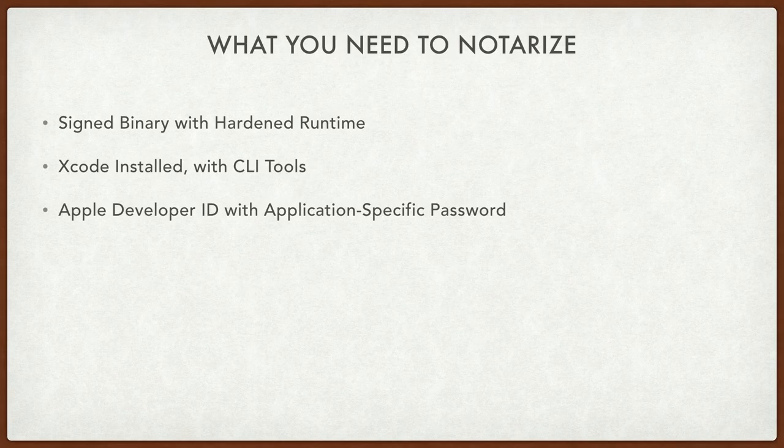This is like: I have signed a document, but I brought my very well-crafted fake ID. And I presented that to the notary. And suddenly the notary realizes, oh crap, that was an expired driver's license — or that doesn't look right after the fact. This gives you the ability to back out the damage before it's more permanent. So what do you need to notarize something? You need a signed binary with a hardened runtime. You need Xcode installed with the CLI tools. And you need an Apple developer ID with an application-specific password.